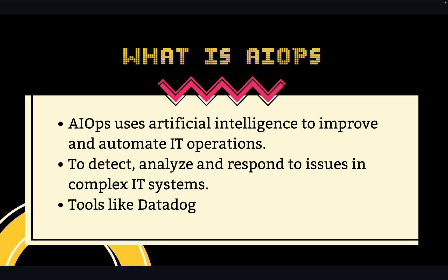Now let's move to AIOps. MLOps is helping you to deploy your model, but what happens in production? You may be having issues and your ops team may find it hard to debug those issues. So AIOps uses artificial intelligence to automate IT operations.